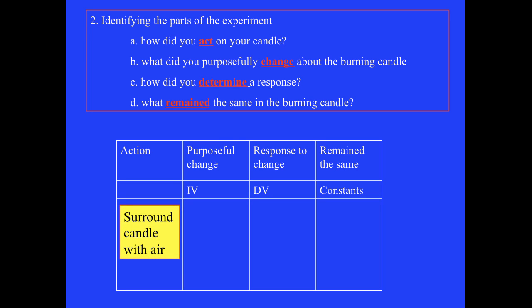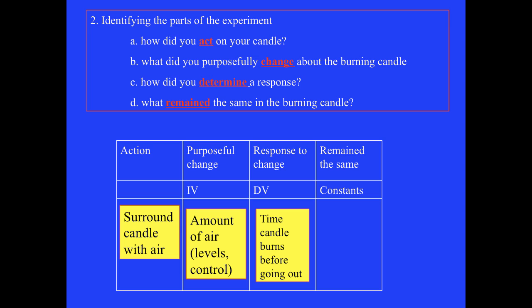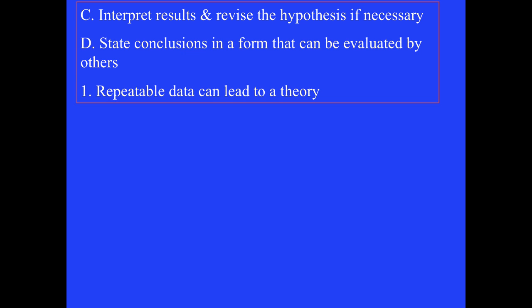Our action would be surrounding the candle with air. Remember, our hypothesis was, if more air was present. As experimenters, we'd actively change the amount of air around our candle—this is our independent variable. We'd be looking for changes in the time the candle burns—this is our dependent variable. Our constants, the things we didn't change, would be things like candle size, how the candle was lit, and the conditions of the room. After we have identified the independent and dependent variables, as well as the controls, then we'd begin our experiment.